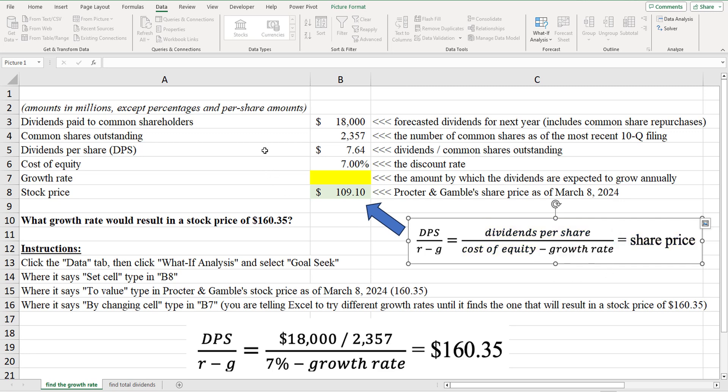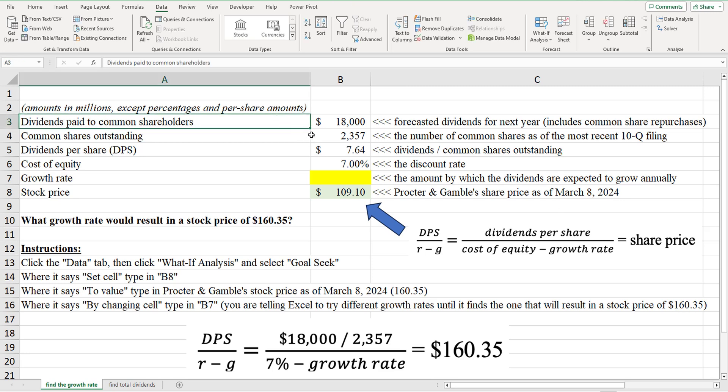Okay. So I've got some data here. This is, I was thinking about the company Procter & Gamble. Let's say that the forecasted dividends for the next year are $18 billion. So this amount is in millions. So even though it says $18,000, I'm saying $18 billion. And let's just say $9 billion of dividends paid to common shareholders, $9 billion of repurchases of common stock.